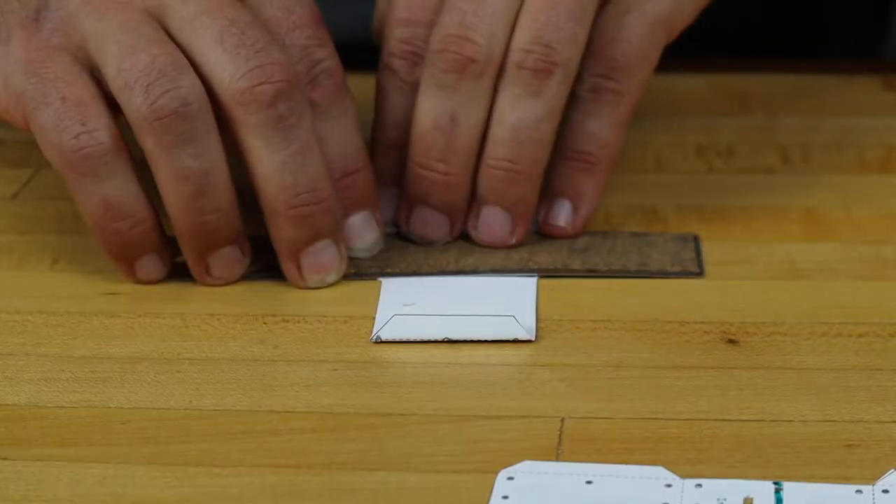Fold all the template pieces to 90 degrees on the dotted line. One handy trick for folding is to flip over the paper and place a straight edge or ruler on the line and then bend the paper up. Do this for all fold lines.